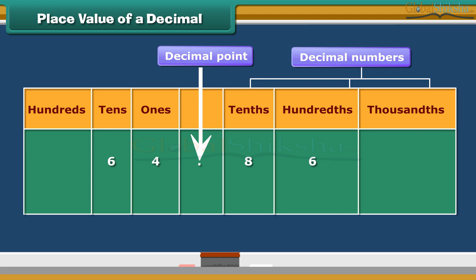Whereas numbers to the left of the decimal point are whole numbers. The place values are ones, tens, hundreds and so on. Therefore, we read this number as 64 and 86 hundredths.